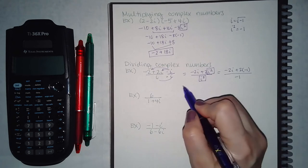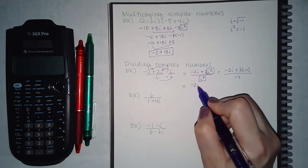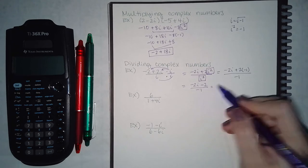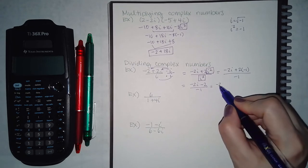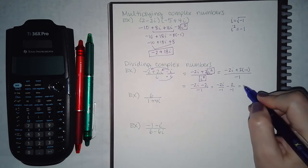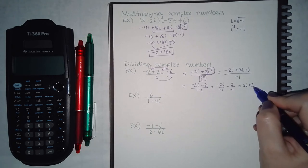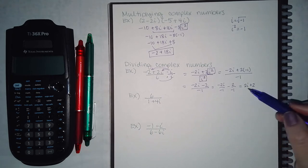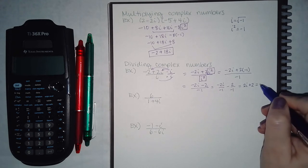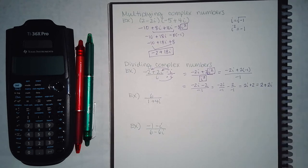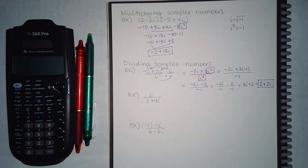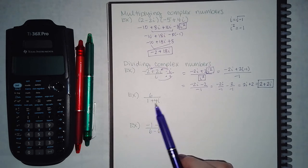This becomes negative 2i minus 2 over negative 1. Simplifying that gives positive 2i and positive 2, and since it's over 1 you don't need to write the fraction. I just have to put my real part in the front and my imaginary part in the back, and now I have my final answer.